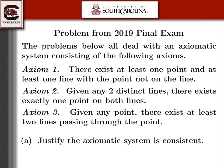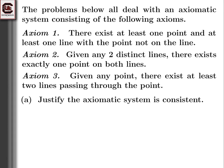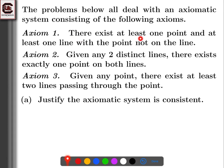For consistency, we want a model that satisfies all these axioms. The first axiom says that we should have at least one point and at least one line with a point not on the line. So we have our line and we need a point not on the line. The second axiom says given any two distinct lines — well, we don't have to worry about that since there aren't two distinct lines.